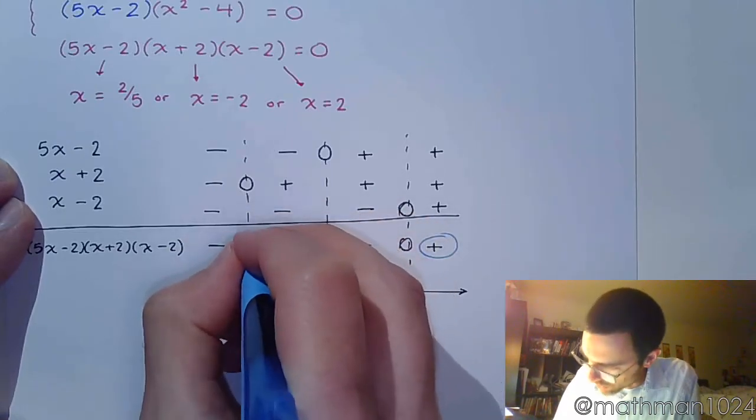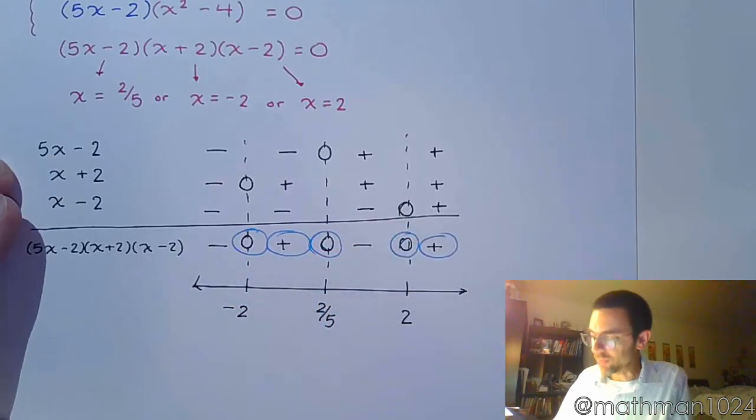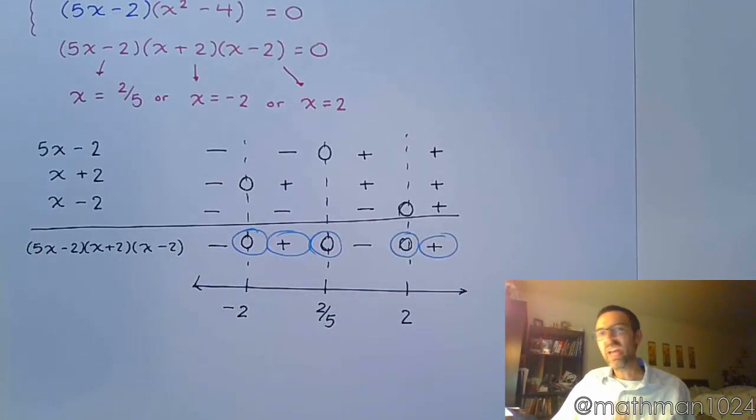So we're positive here and right here. And we're equal to 0, which means we're going to include this, that guy, and this one. So these are all of the regions and those points that are going to make up our solution.